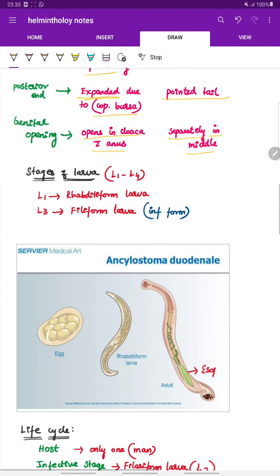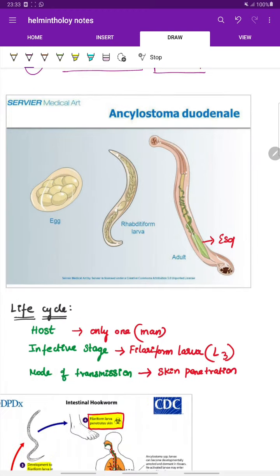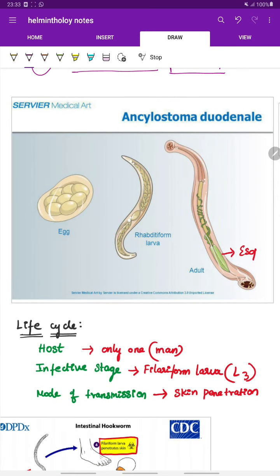Stages of larva: has four stages of larva L1 to L4, out of which important is L1 and L3. L1 is the rhabditiform larva, L3 is the filetiform larva which is the infective form. This is an image showing the egg, rhabditiform larva, and the adult hookworm Ankylostoma duodenale.